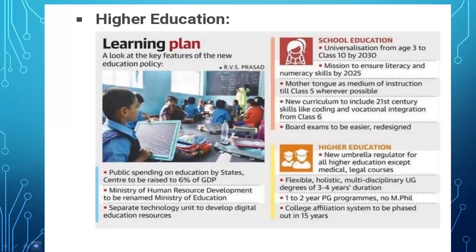Key features of the new education policy: Public spending on education by state and central governments will rise to 6% of GDP. The Ministry of Human Resource Development will be renamed the Ministry of Education. A separate technology unit will develop digital education resources. School education will be universalized from age three to class ten by 2030. A mission will ensure foundational literacy and numeracy by 2025. Mother tongue will be the medium of instruction until class five, wherever possible.